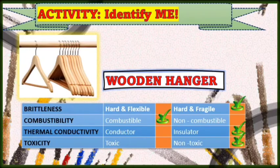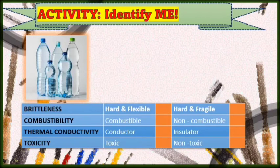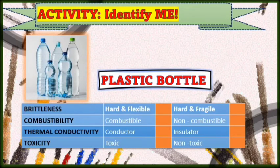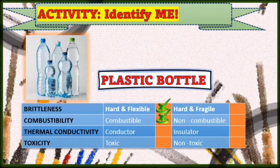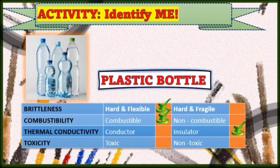Now let's identify the property of a plastic bottle. In terms of brittleness, is it hard and flexible or hard and fragile? Yes, that is hard and fragile. How about its combustibility? Is that combustible or non-combustible? Yes, that is combustible. How about its thermal conductivity? Is that a conductor or insulator? Yes, it is an insulator. How about its toxicity? Is that toxic or non-toxic? Yes, that is non-toxic.